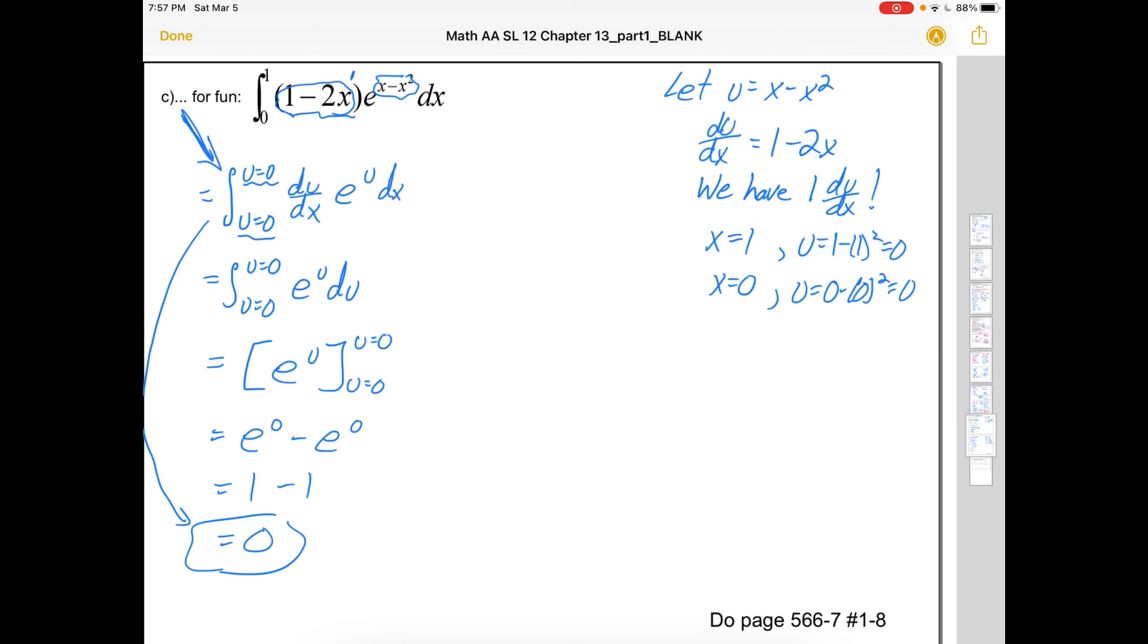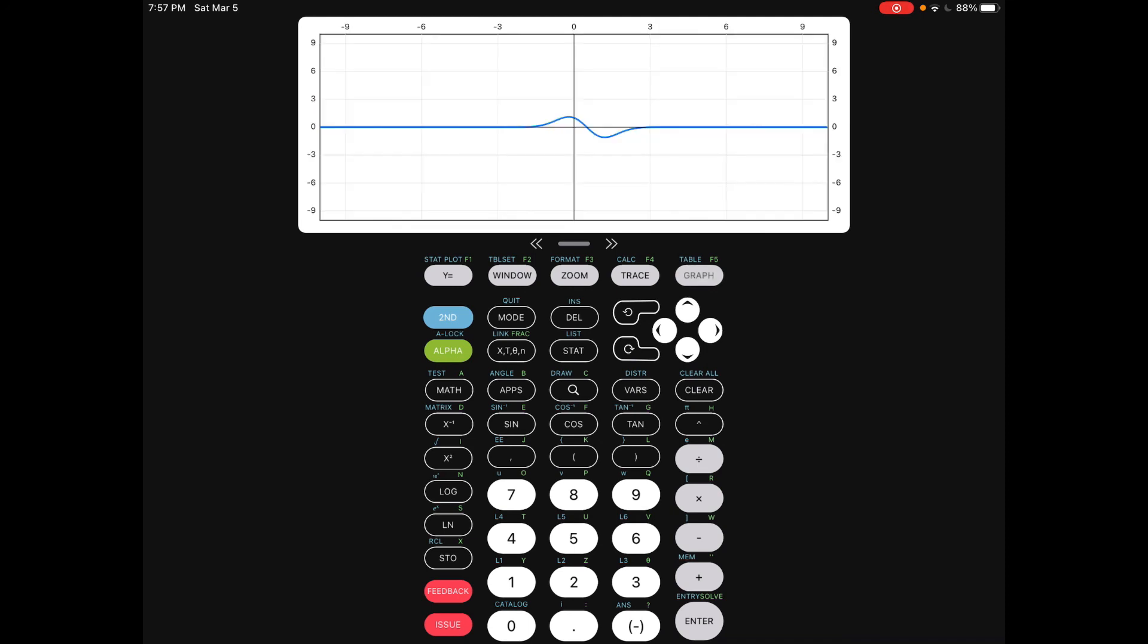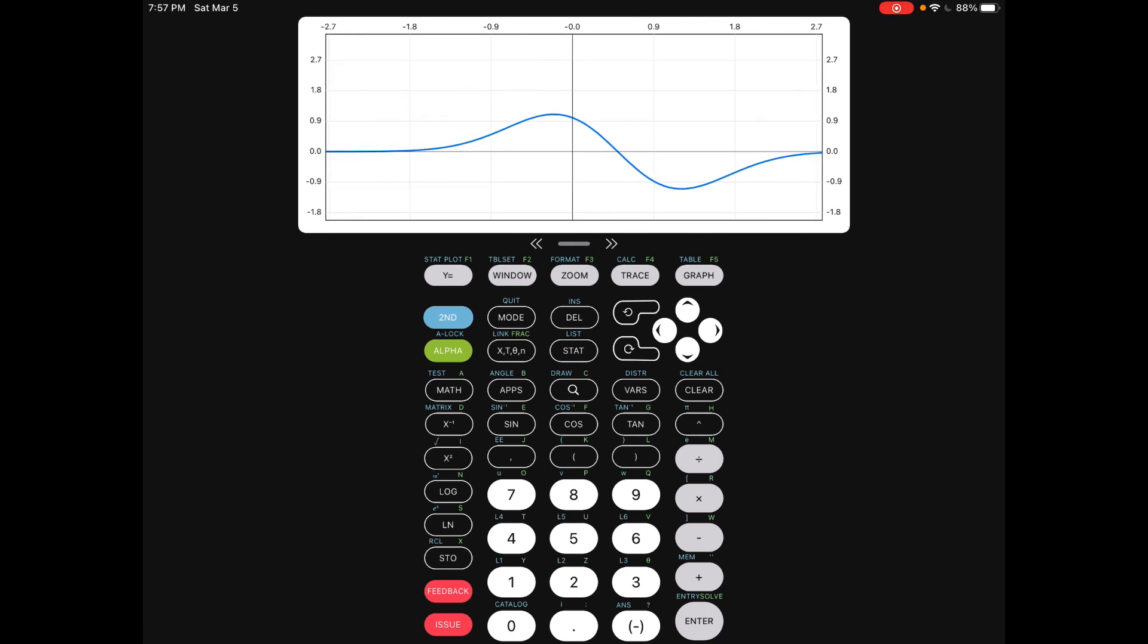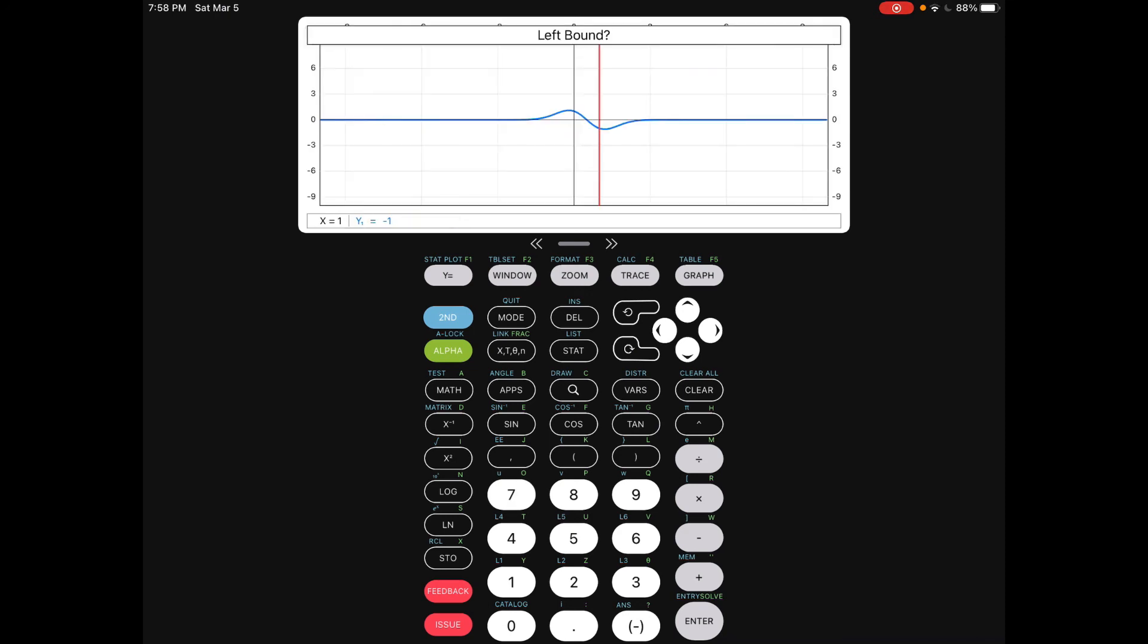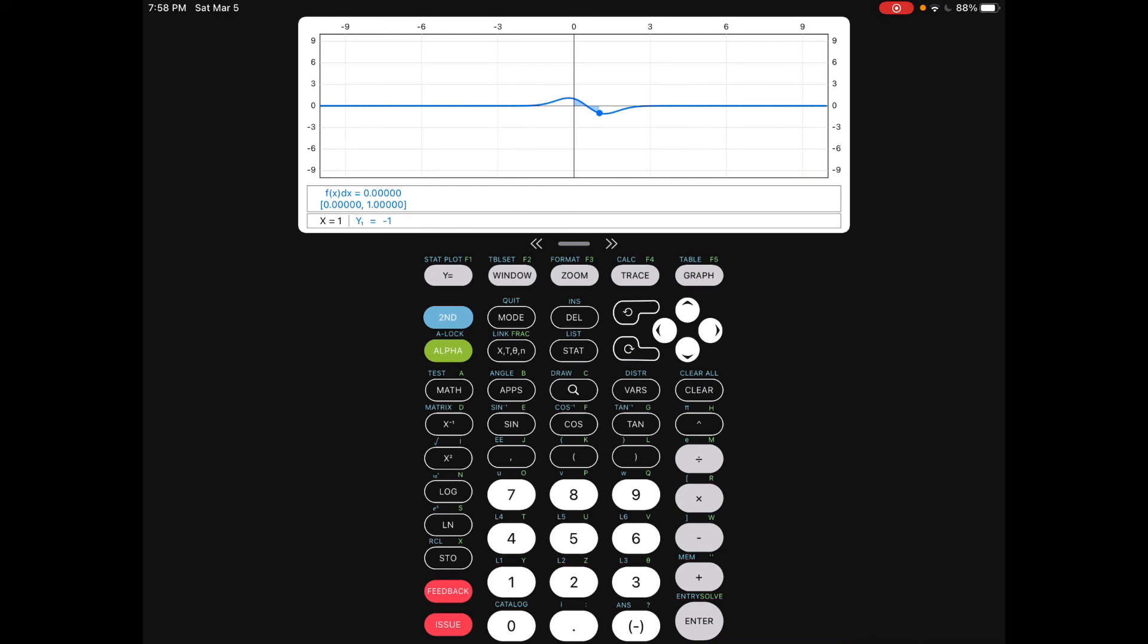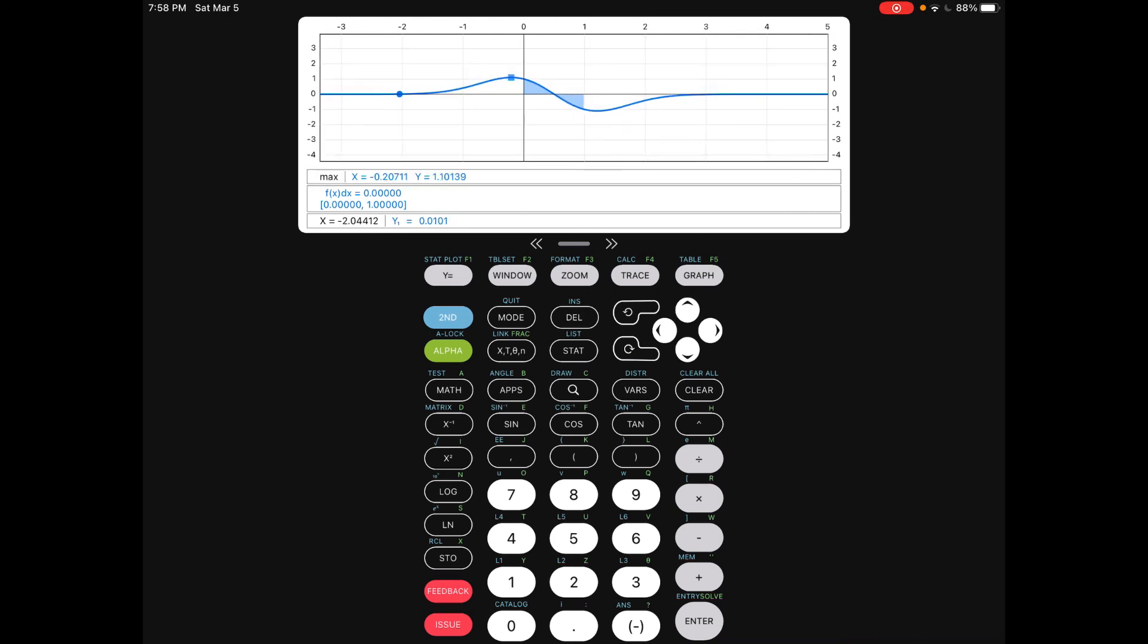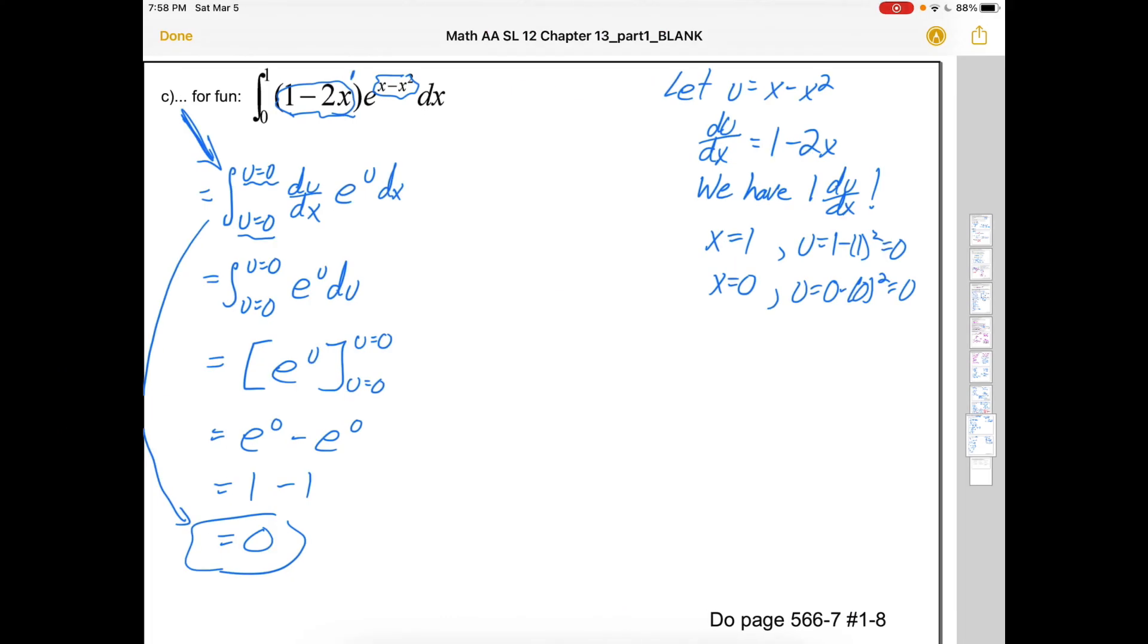Let's quickly look at the graph. Here I've got it written in. I'll graph it. Maybe I'll try and zoom in. If I asked it to find that integral. So second, calc, press 7 for integral. From 0 to 1. You can see that that area has an equal amount above and below the x-axis. That's why the net area or the integral is 0. Algebraically, we can see it because it just worked out to be 0 or because we had no width.